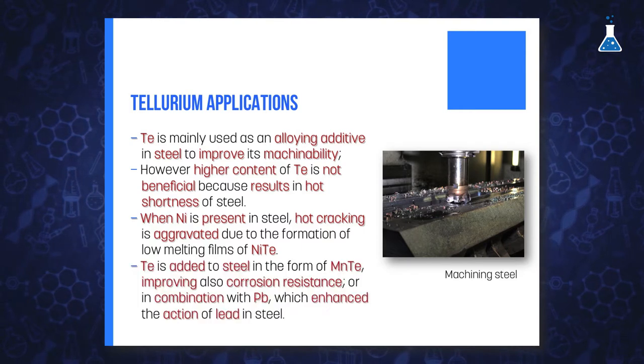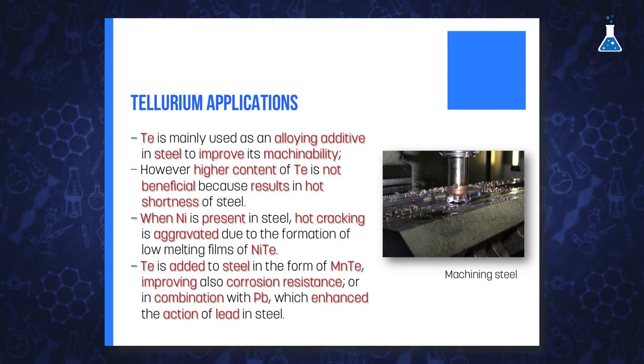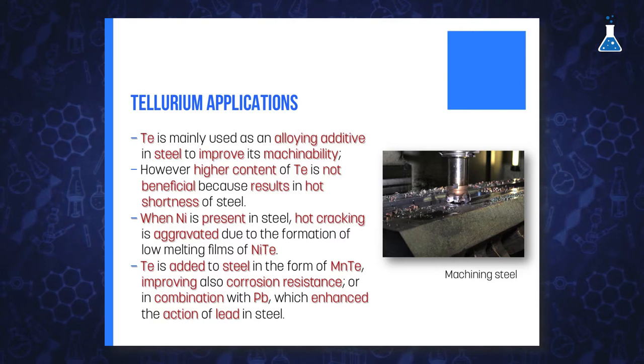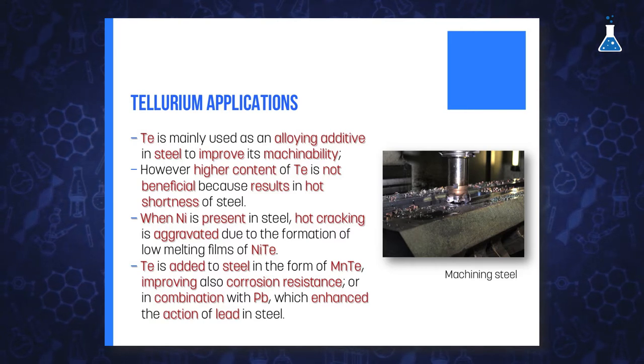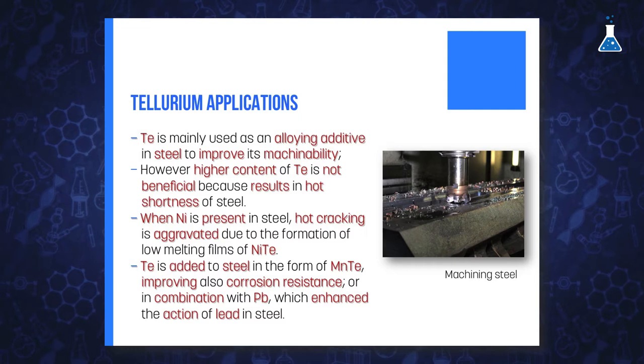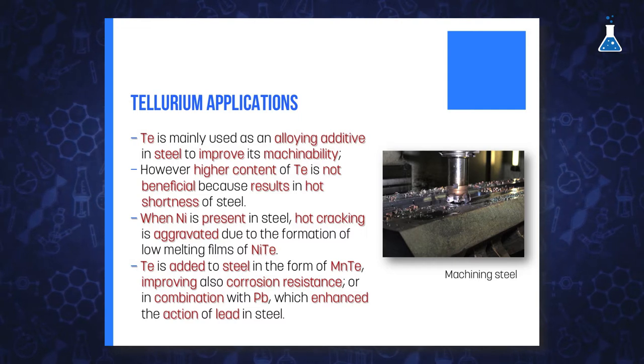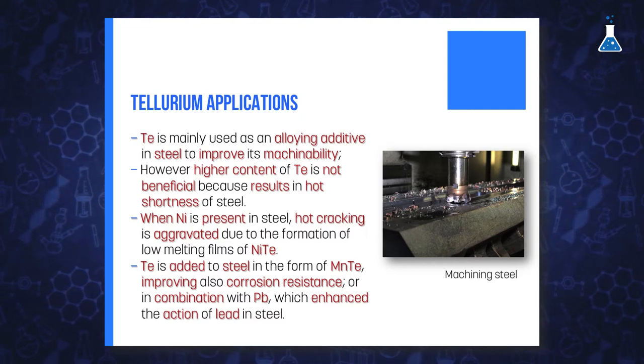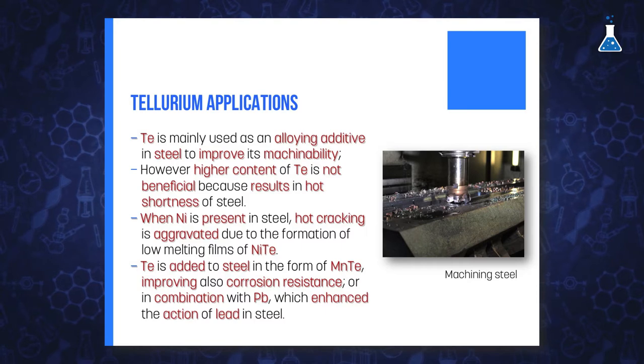For that reason, stainless steels usually don't contain Tellurium, with Selenium-Nickel alloy being the usual combination. Tellurium can be added to steels in the form of manganese Telluride, which also improves corrosion resistance, or in combination with lead, principally as lead Telluride, which enhances the action of lead in the steel.